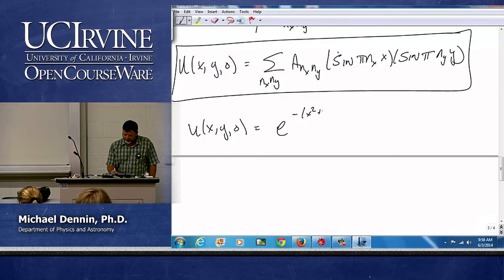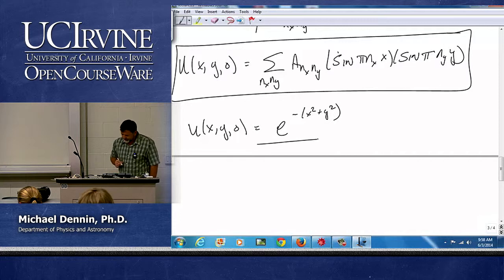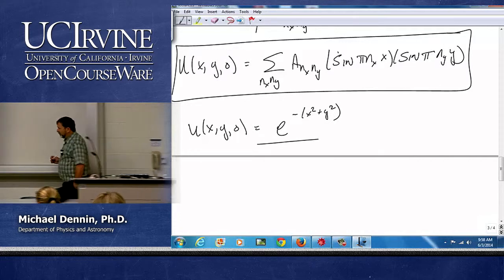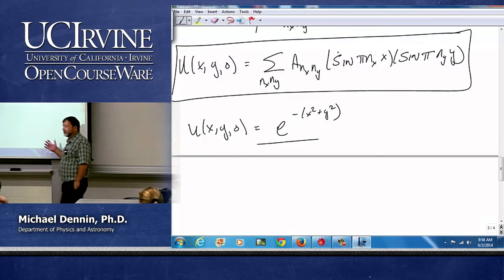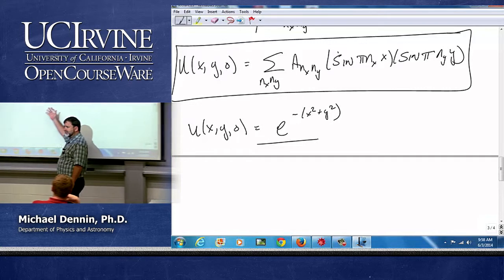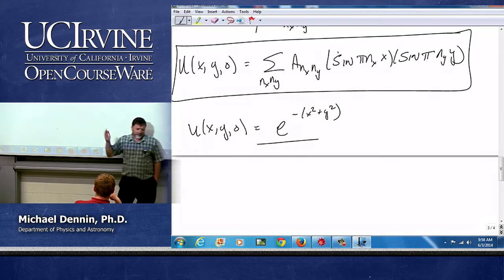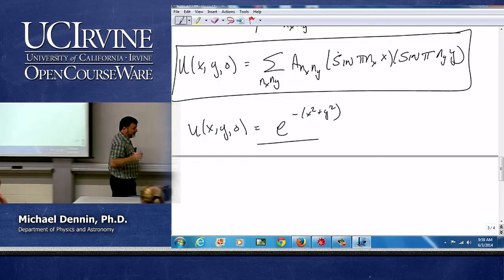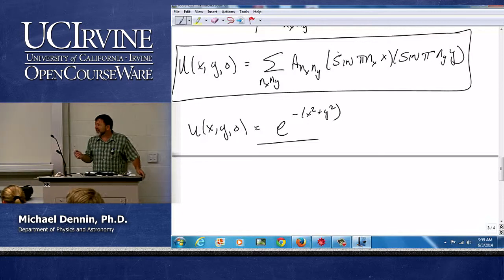And sometimes it's best to see mistakes not the final product. The first thing I did was I said let's consider an initial condition of e to the minus x squared plus y squared. So why would I pick that initial condition? What is that? Radially distributed, yeah but what function do we call that?